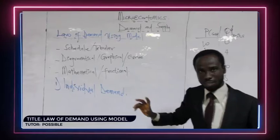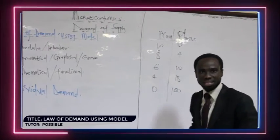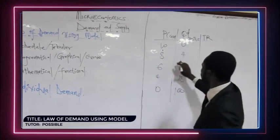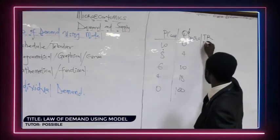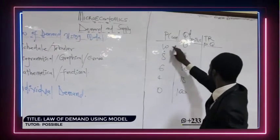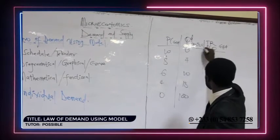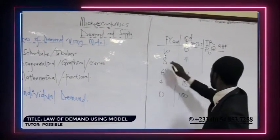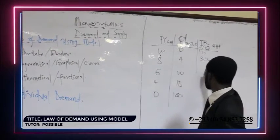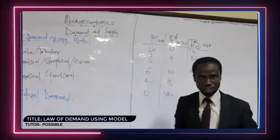Before we move on, if a question asks you to calculate total revenue: total revenue equals price times quantity. So you multiply price by quantity demanded — for example, 10 times 0 is 0 Ghana cedis, and you continue for each row. I hope that makes sense.